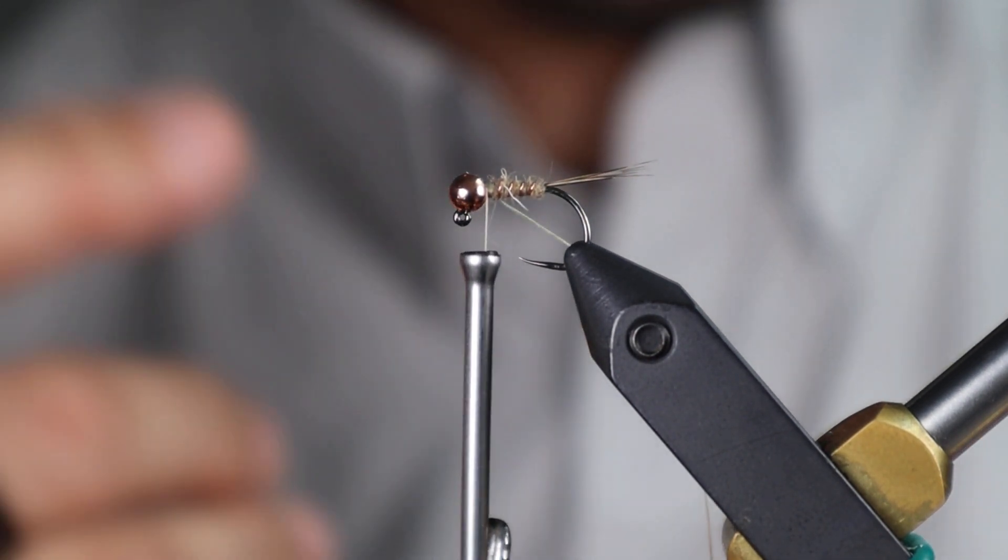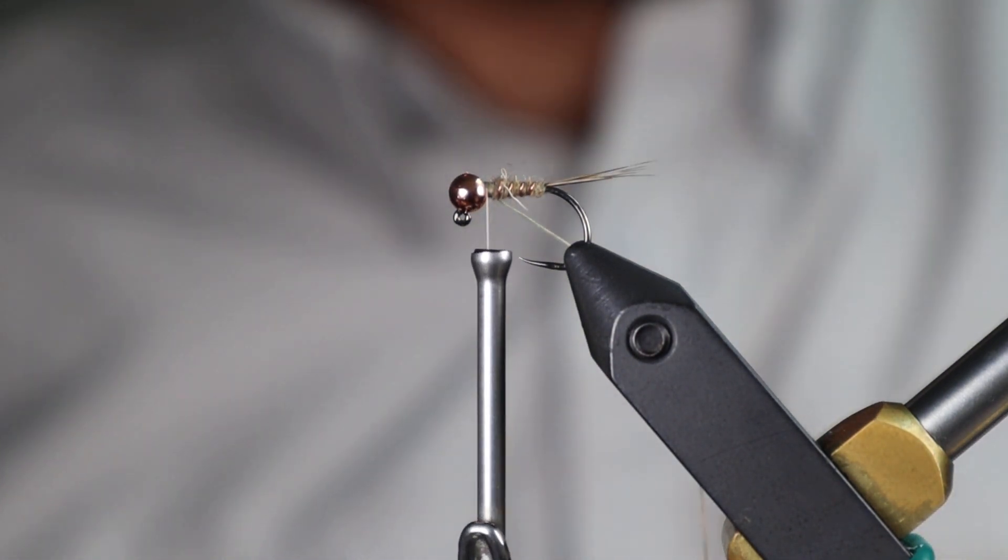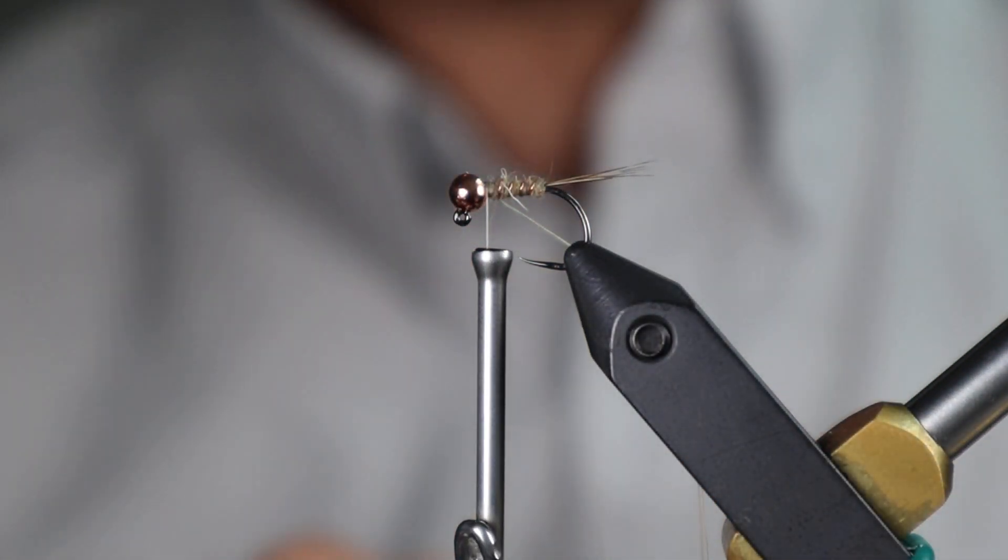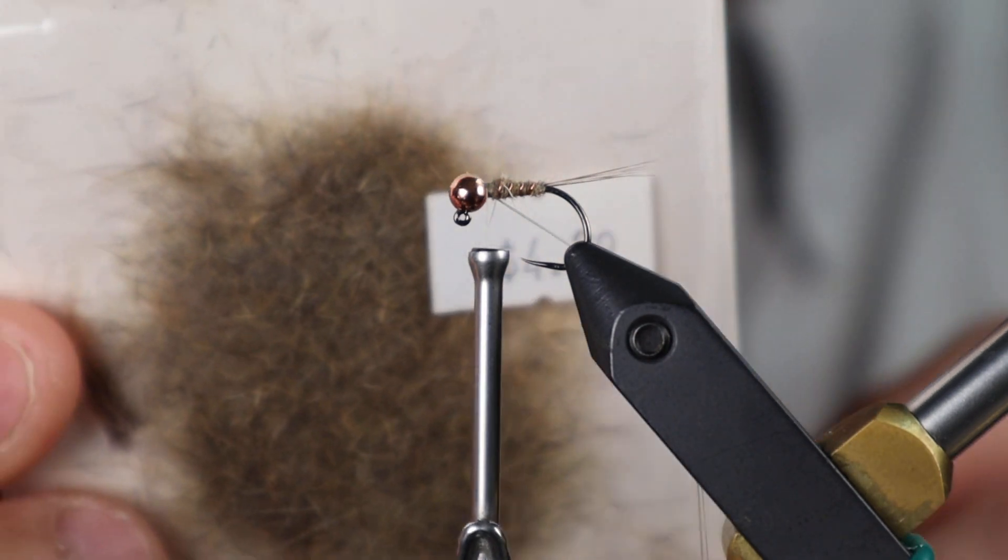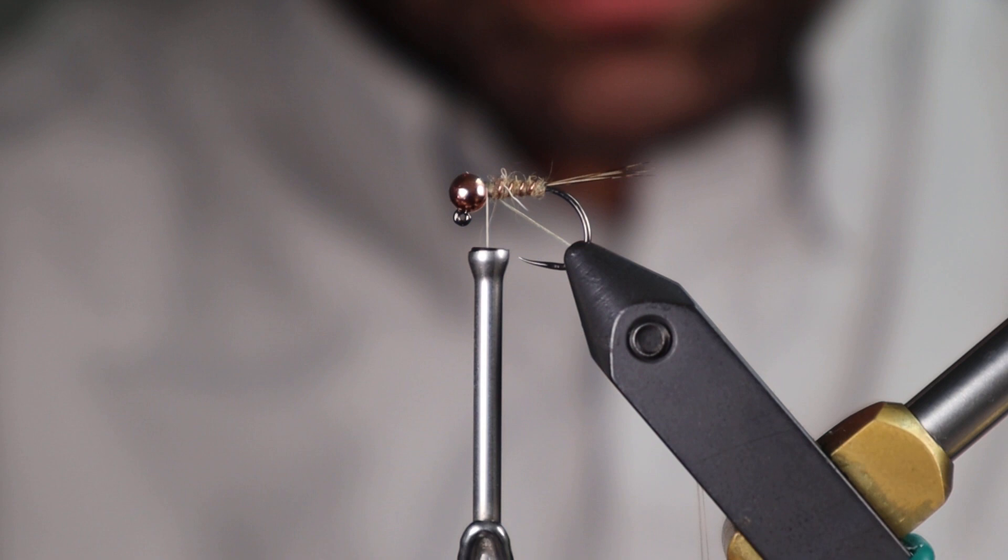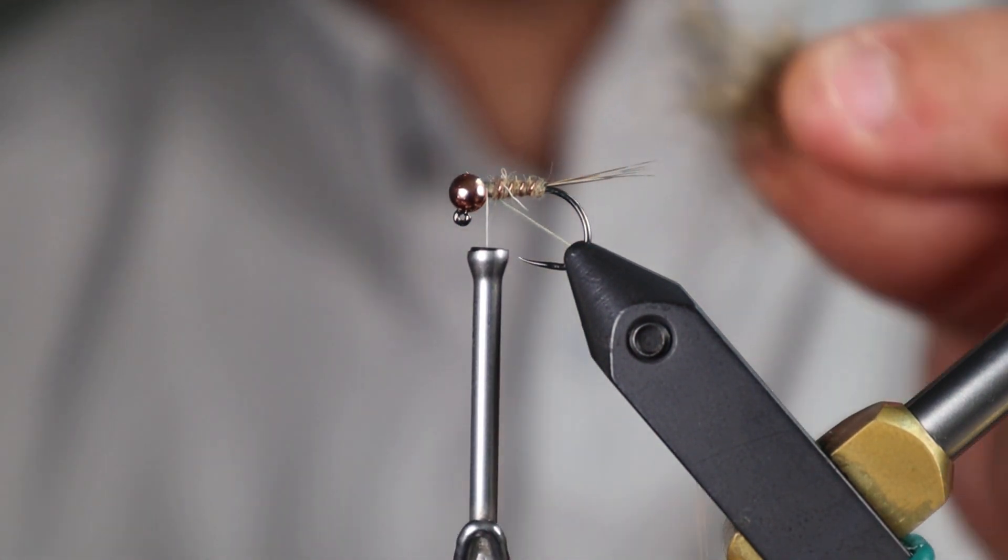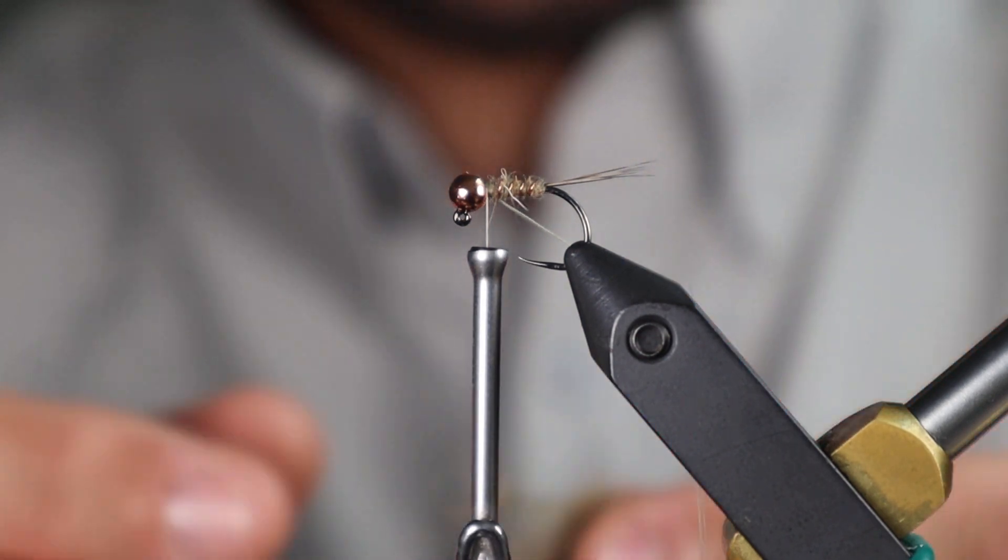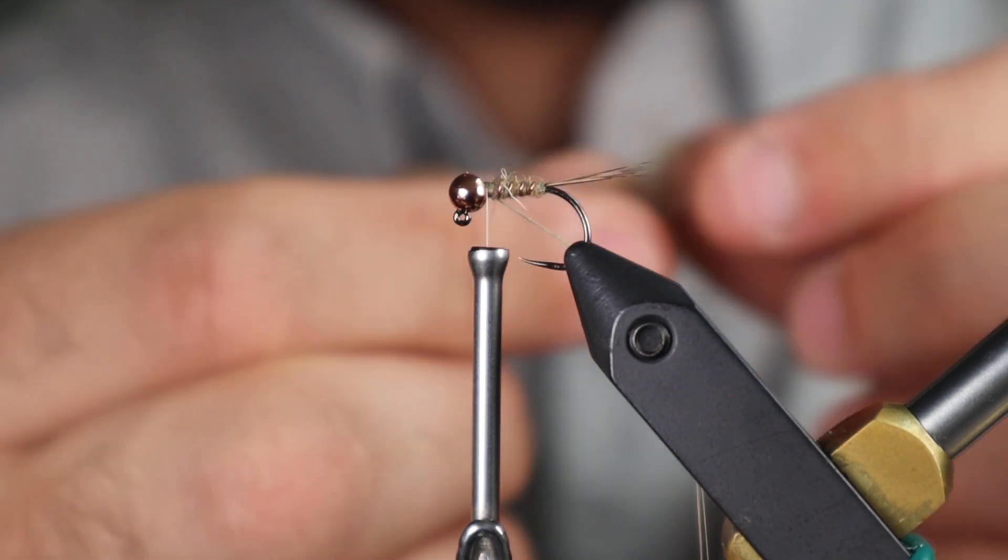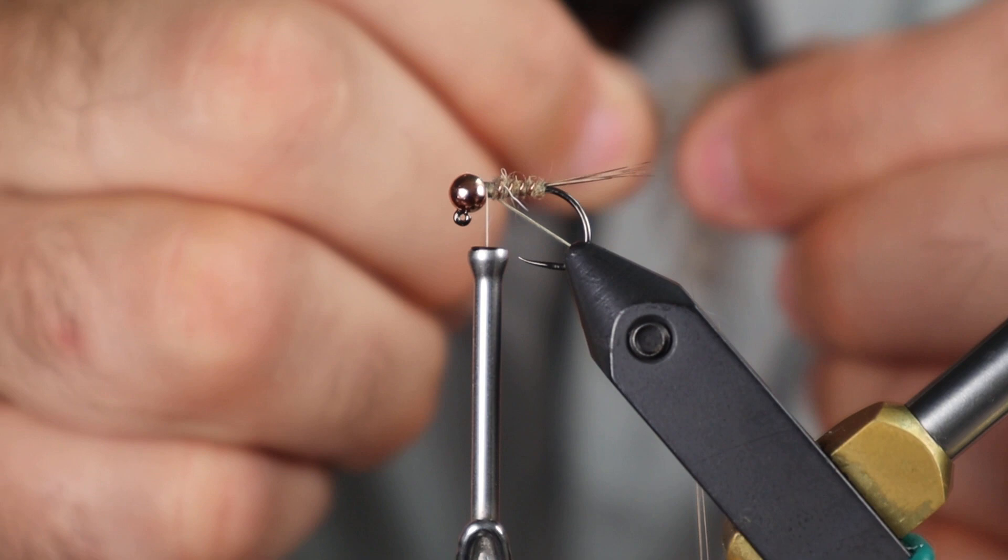I'm using SLF squirrel. This is also the natural color, just natural fox squirrel. It's super spiky stuff, really good for collars. I'm just gonna take a little pinch. This is way too much. We don't need this much, but that's what came out. So I'll take about half that, and I'm just really roughly gonna try to align it a little bit.